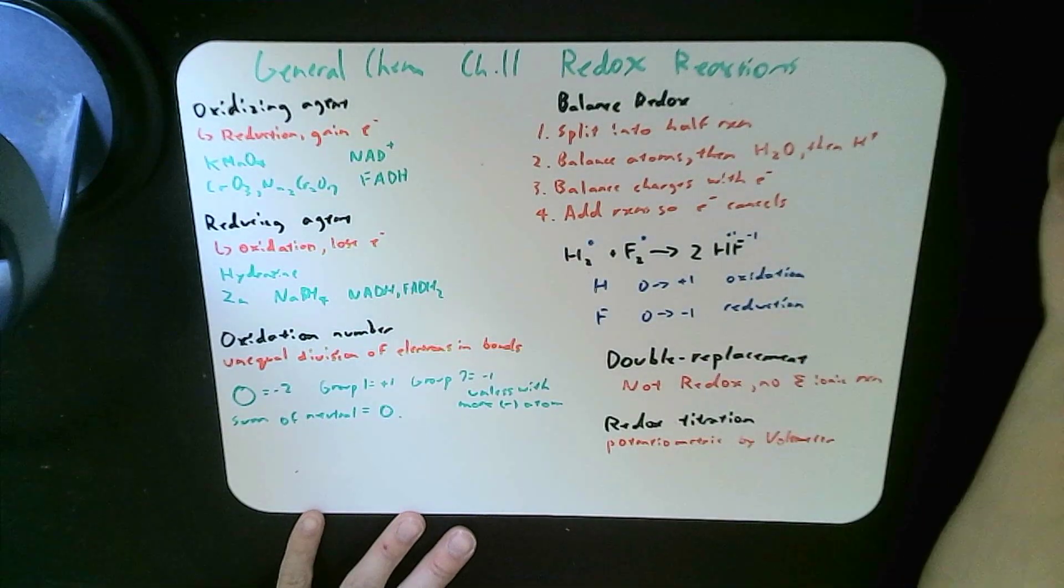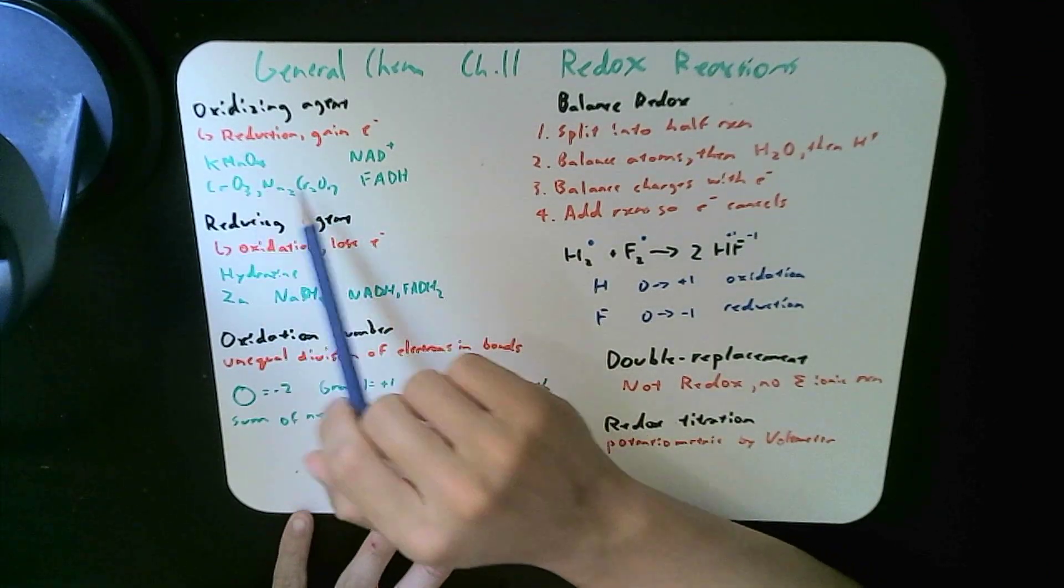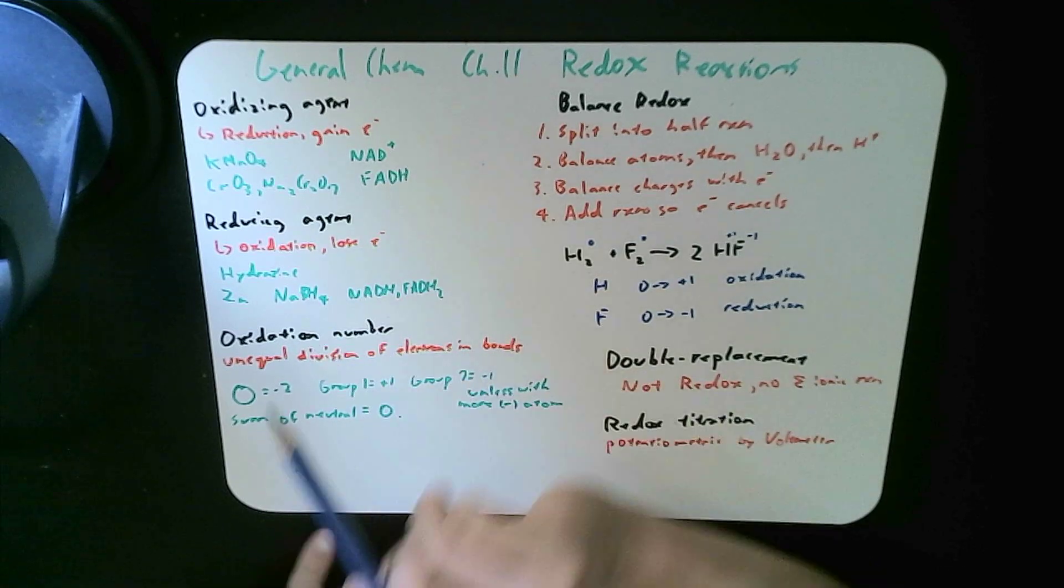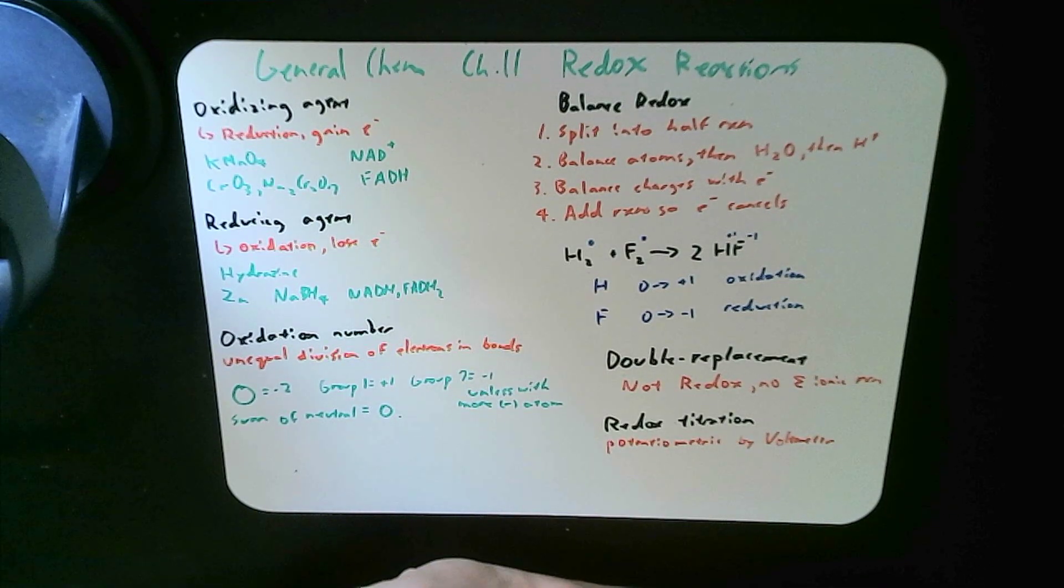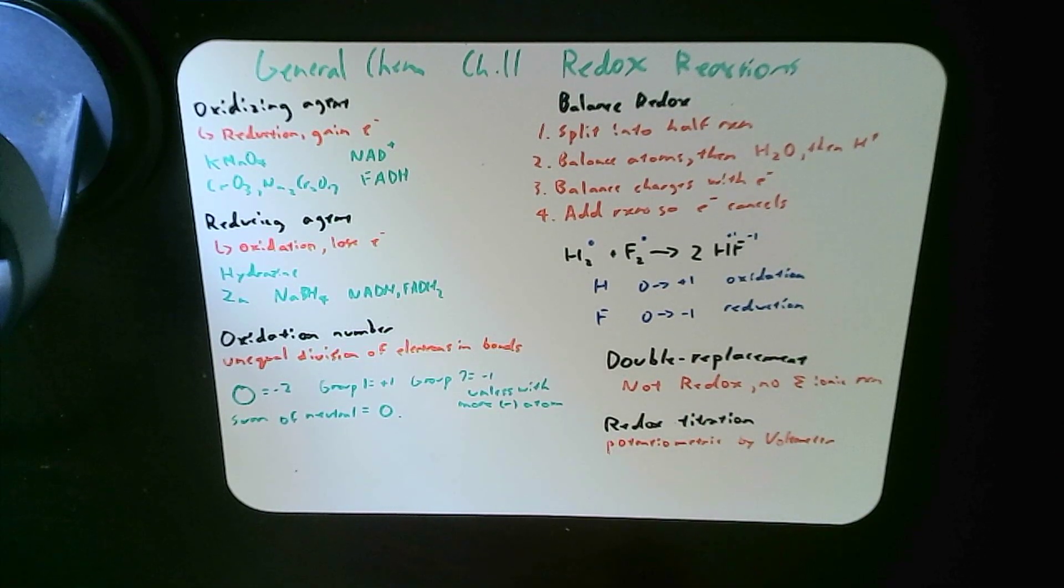So they cause some other compound to oxidize, while they themselves reduce. So they gain electrons. NAD+, if they gain an electron, they turn into NADH, and gain that potential to go ahead and later go on to oxidize themselves in another reaction.